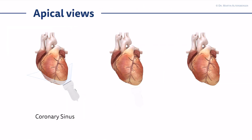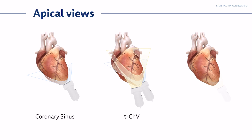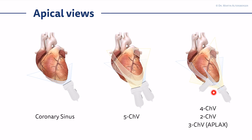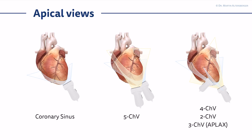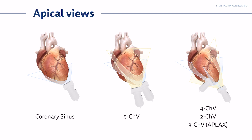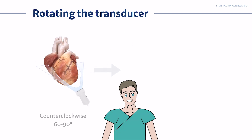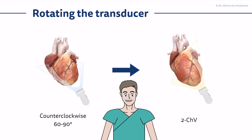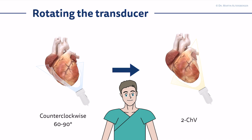To recall the apical views: for the four-chamber view, you have this orientation and then you start rotation and continue until you see the structures you need to find. With the counterclockwise rotation, approximately 60 to 90 degrees, you cut the heart from this perspective, visualizing the left ventricle and the left atrium.